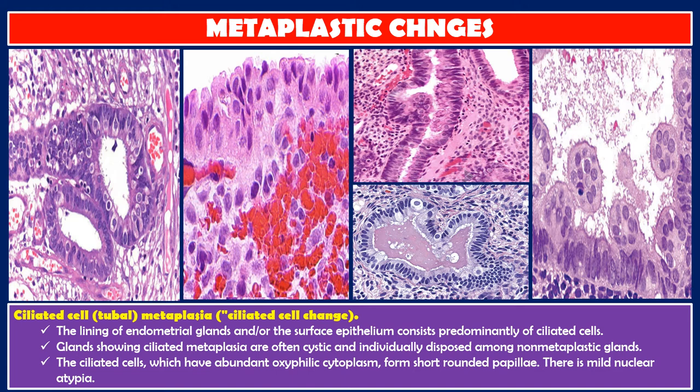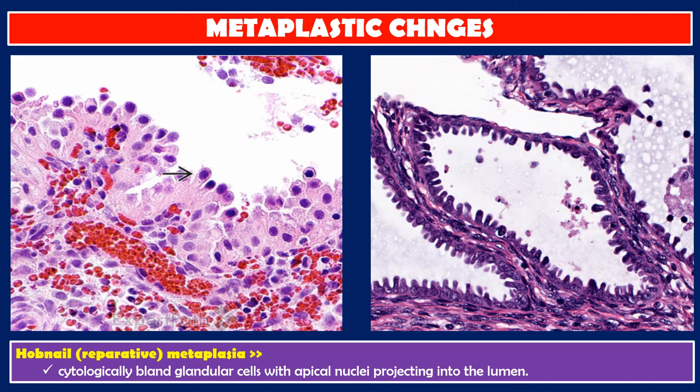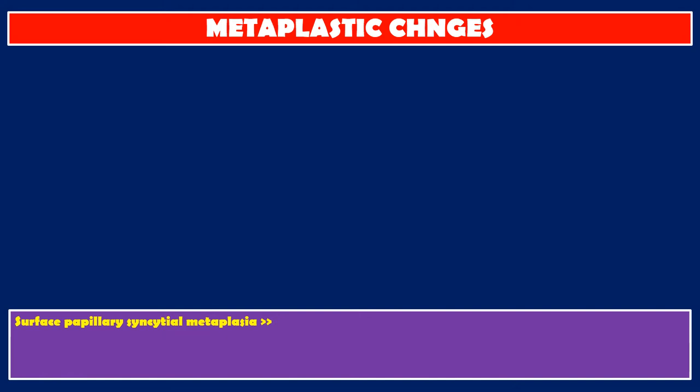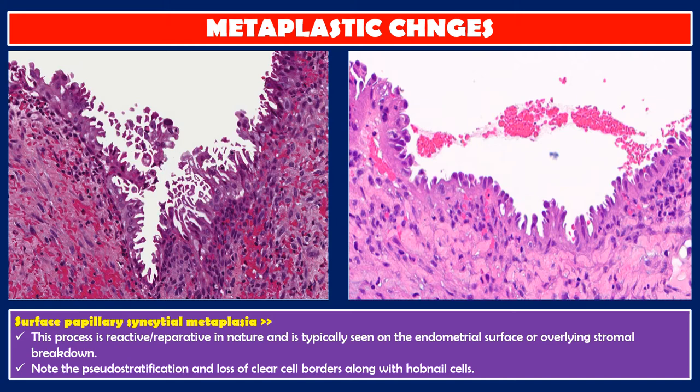Hobnail reparative metaplasia: cytologically bland glandular cells with apical nuclei projecting into the lumen. Surface papillary syncytial metaplasia: this process is reactive and reparative in nature, typically seen on the endometrial surface or overlying stromal breakdown. Note the pseudostratification and loss of clear cell borders along with hobnail cells.